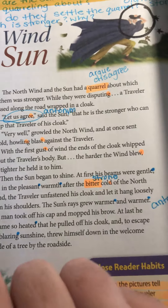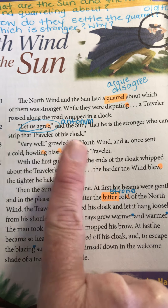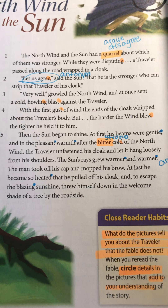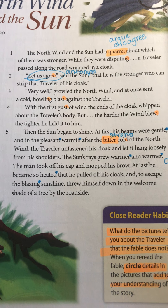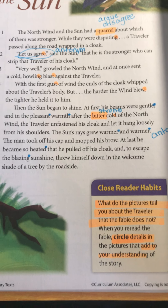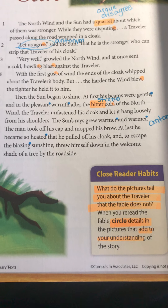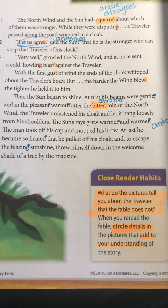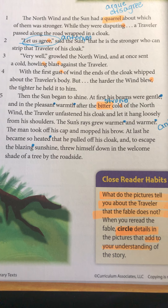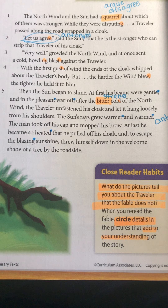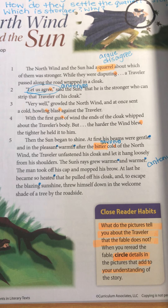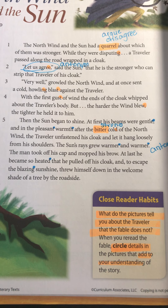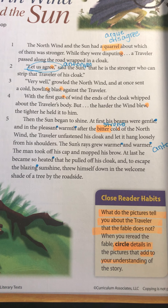Very well, growled the north wind, and at once sent a cold howling blast against the traveler. With the first gust of wind, the ends of the cloak whipped around the traveler's body. But the harder the wind blew, the tighter he held it to him. Then the sun began to shine. At first his beams were gentle, and in the pleasant warmth after the bitter cold of the north wind, the traveler unfastened his cloak and let it hang loosely from his shoulders. The sun's rays grew warmer and warmer. The man took off his cap and mopped his brow. At last he became so heated that he pulled off his cloak and, to escape the blazing sunshine, threw himself down in the welcome shade of a tree by the roadside.